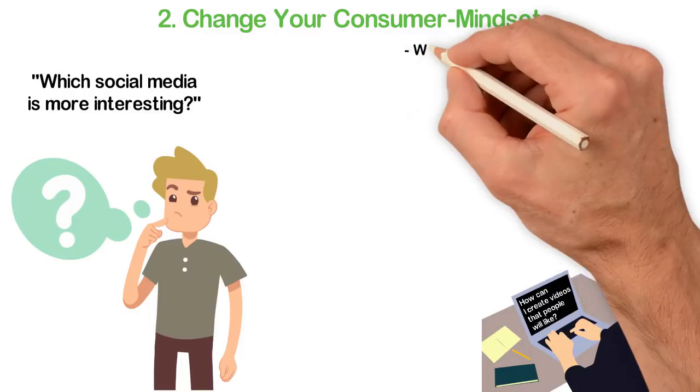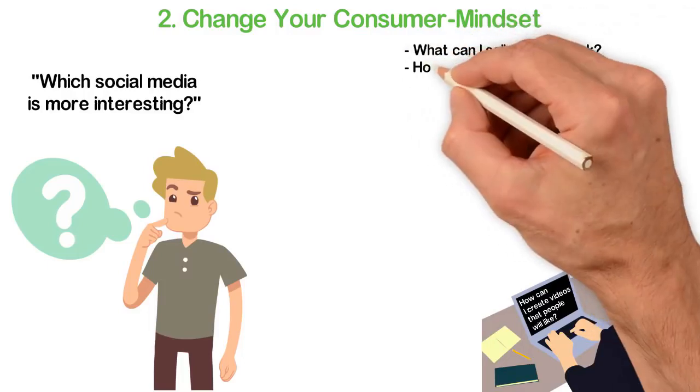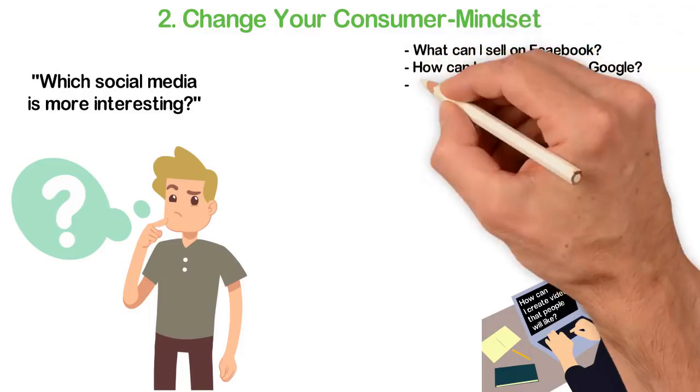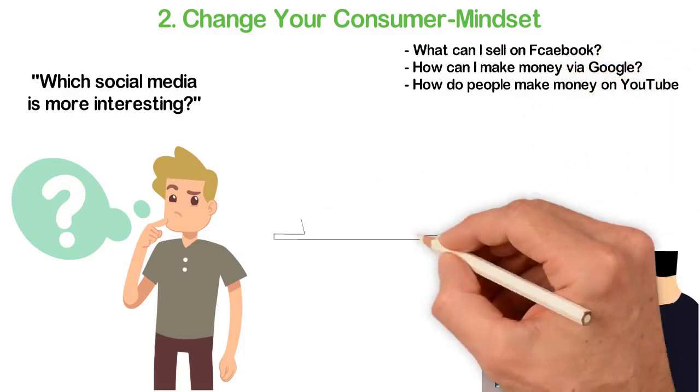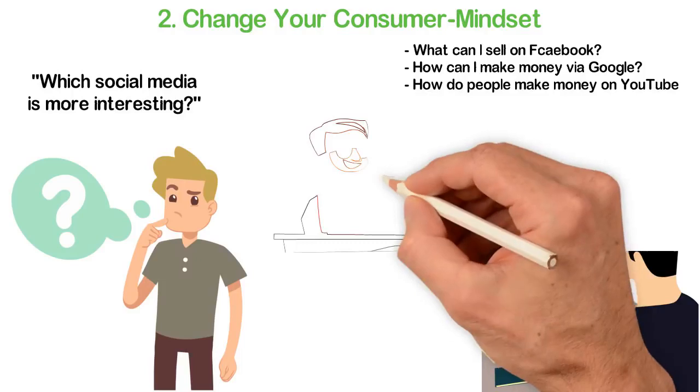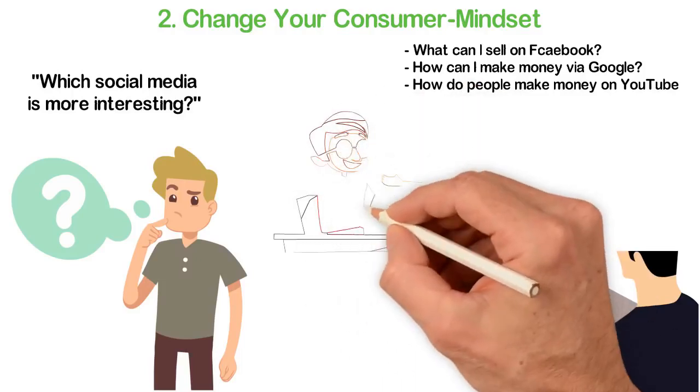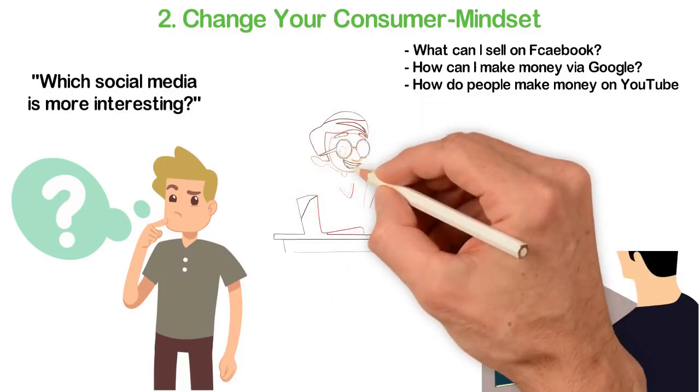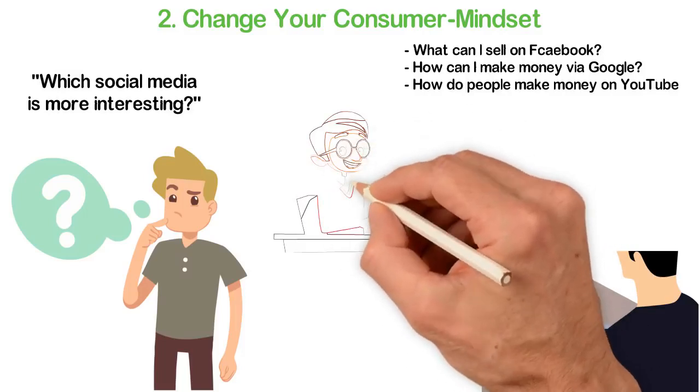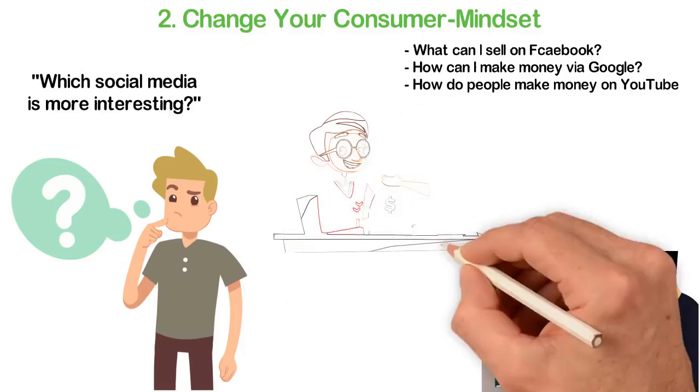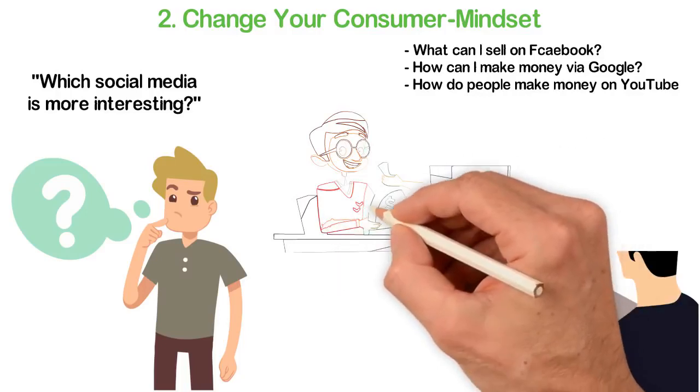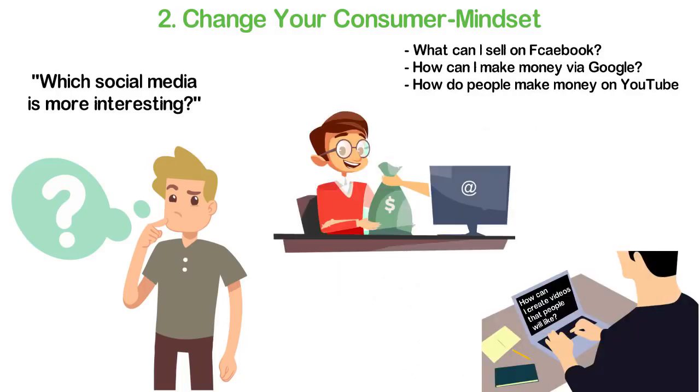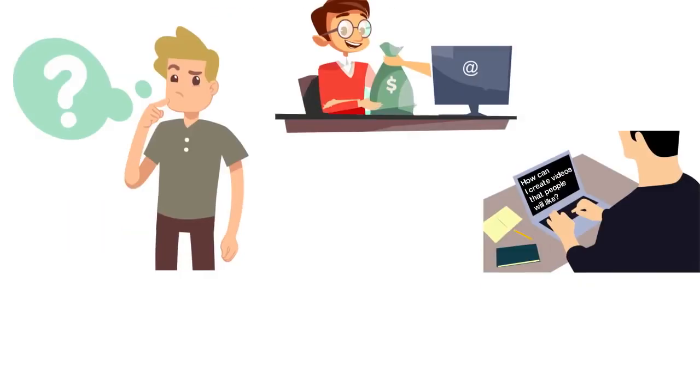Start thinking: what can I sell on Facebook? How can I make money via Google? How do people make money on YouTube? Look into the search engines and learn, then practice, practice, and practice till you make your first dollar online. Try again and again till you make your first $100 online. If you keep on trying and learning, you'll one day start making $5,000 to $10,000 every month online.